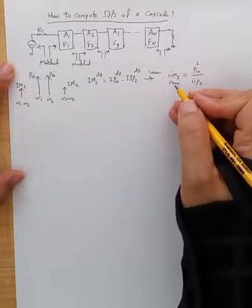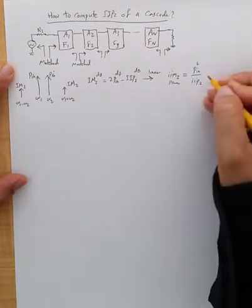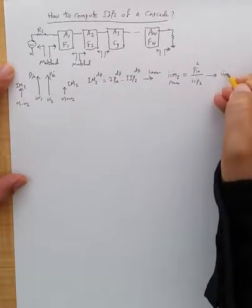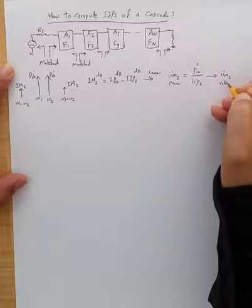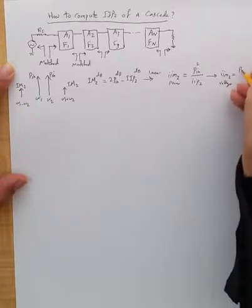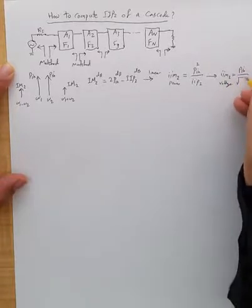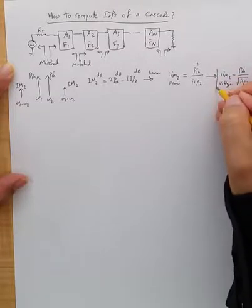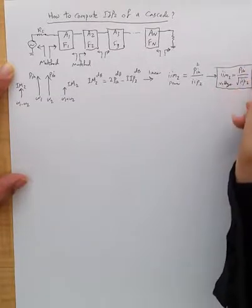This is in power, not voltage. So voltage-wise, is Pn divided by the square root of IIP2. So have that in mind.